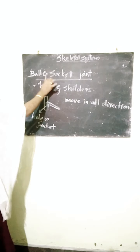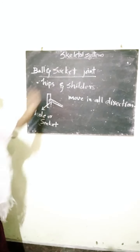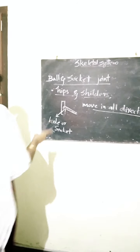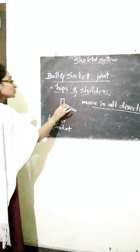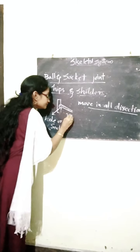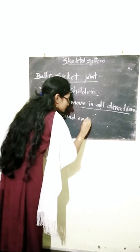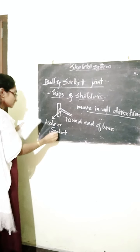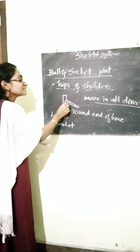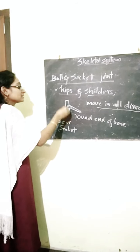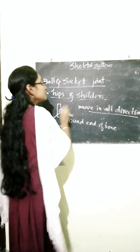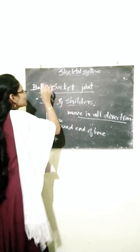This is about the ball and socket joint. We see it in our hips and shoulders, and it is free to move in all directions. In this joint, there is a round end of bone that fits in the hole or socket of another bone. That is how we can move this ball in all directions.